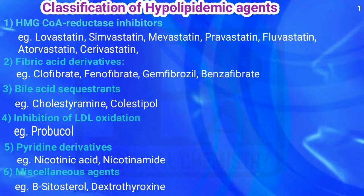In this class we are going to see anti-hyperlipidemic agents. First we'll see the classification. It is classified into six types. The first one is HMG-CoA reductase inhibitors — all the statins come under this type. Examples are lovastatin, simvastatin, mevastatin, pravastatin, fluvastatin, atorvastatin, and cerivastatin. The second one is fibric acid derivatives; examples are clofibrate, fenofibrate.